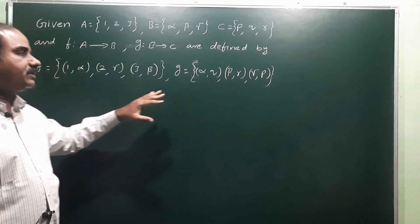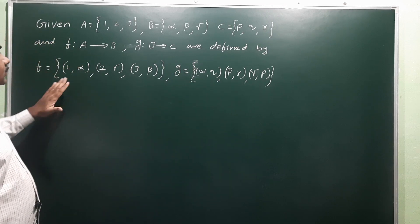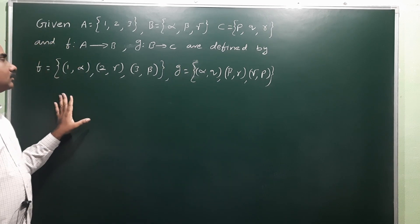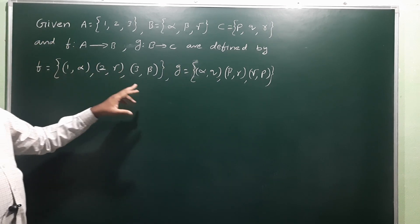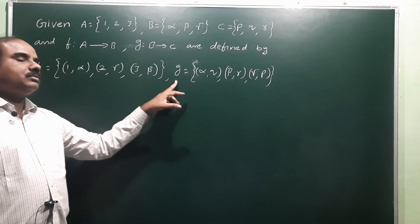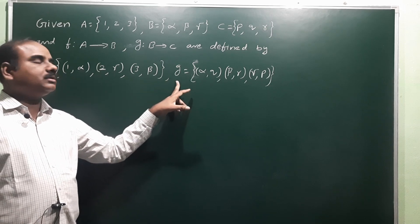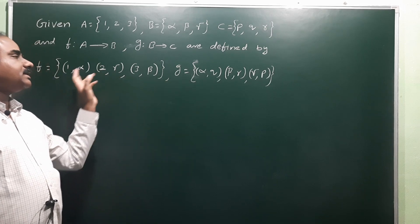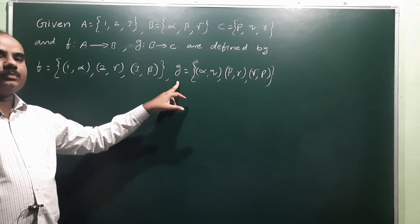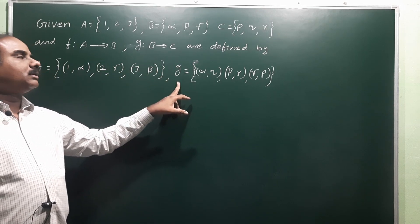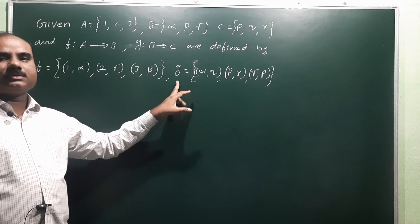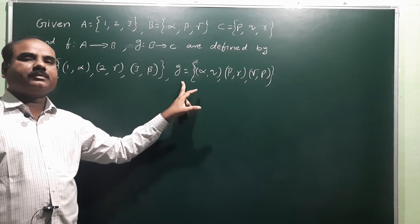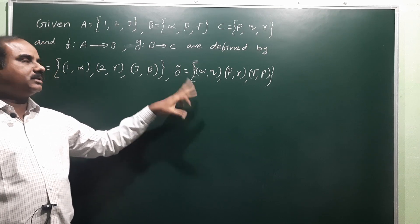We have to show that f and g are bijective functions, and we have to prove that (g∘f)⁻¹ is equal to f⁻¹ ∘ g⁻¹.